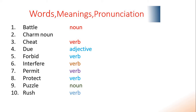Word number 4: due means 'Matawakih' — something expected at a certain time. Word number 5: forbid means 'Manakardan, Mamanakardan.' Number 6: interfere means 'Madaakhila kardan'; in Pashto, 'Madaakhila kowal.' Permit means 'Ejaza dadan, Ejaza war kowal.' Protect means 'Muhafizat kardan' or 'Hafazat kardan.'